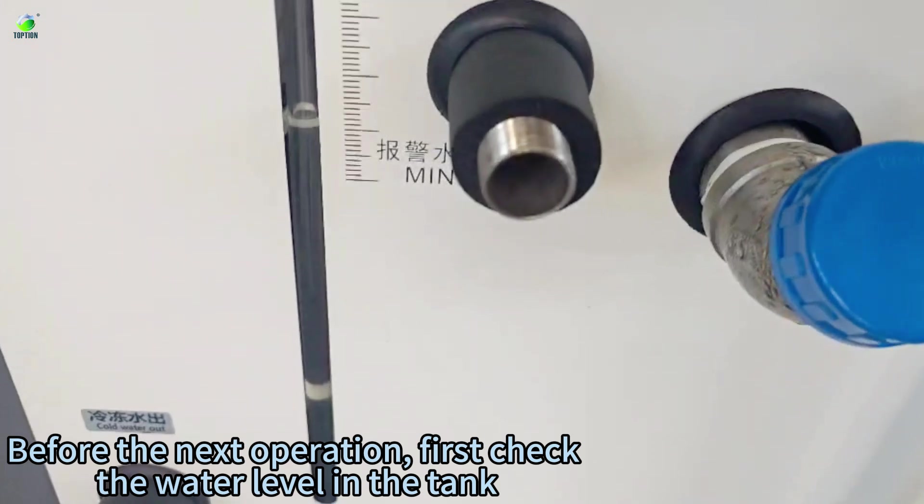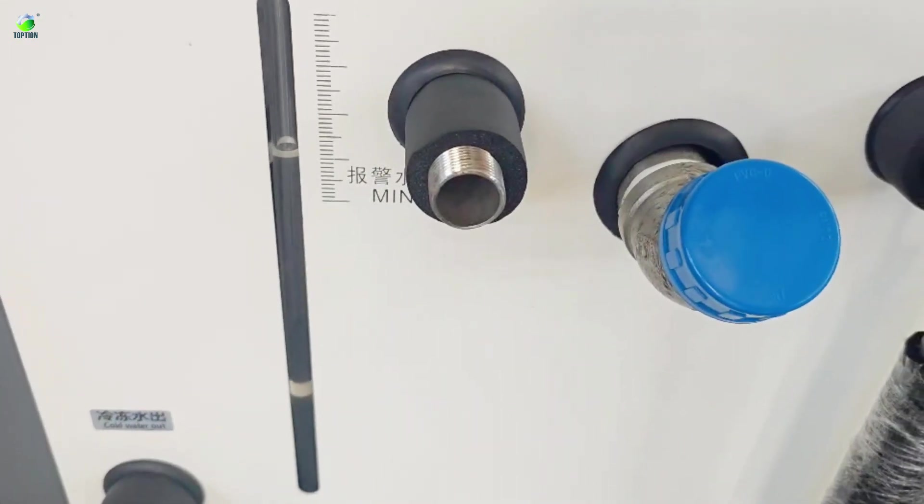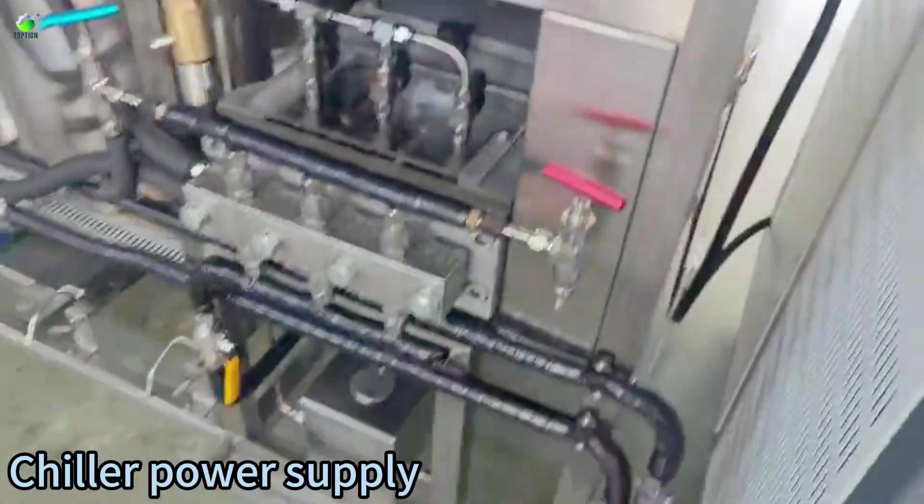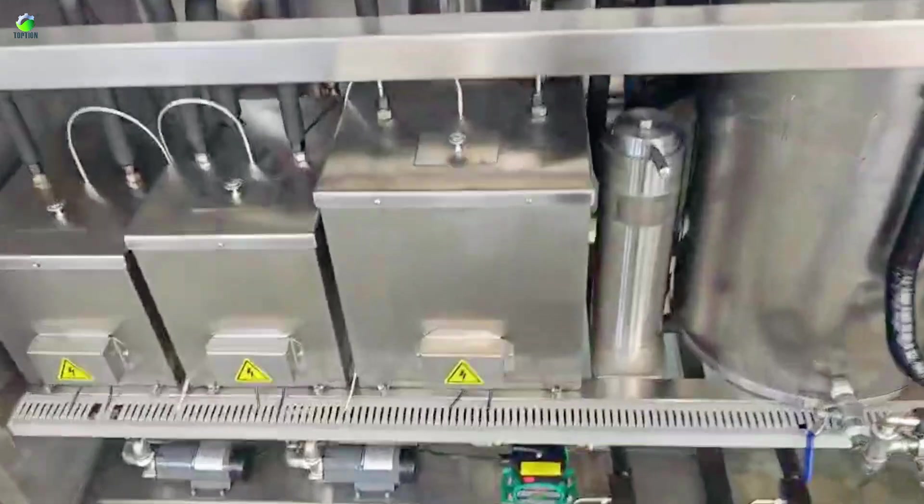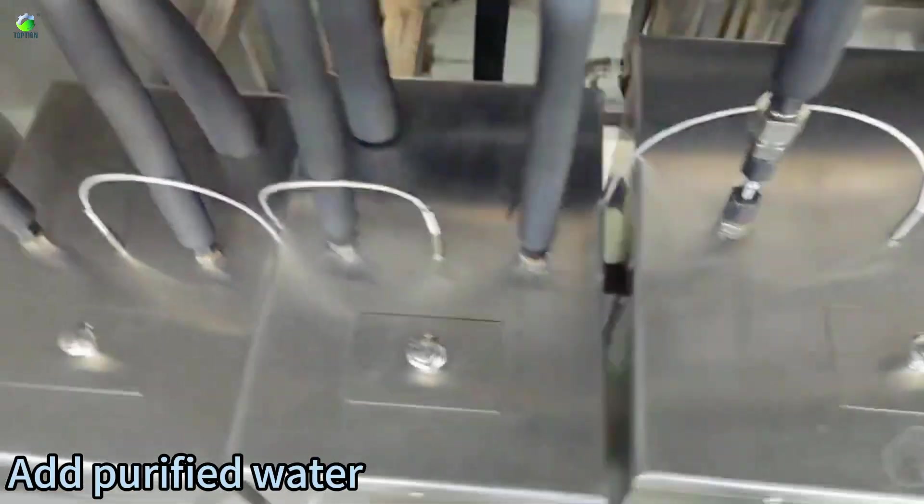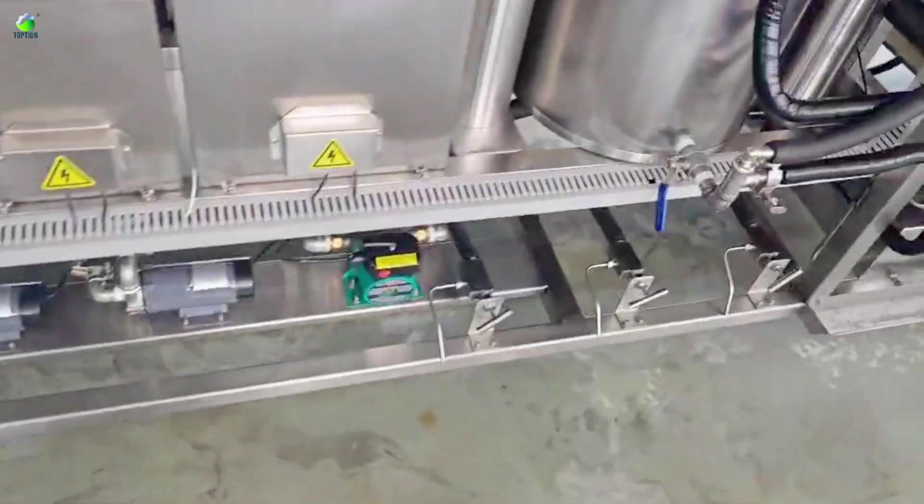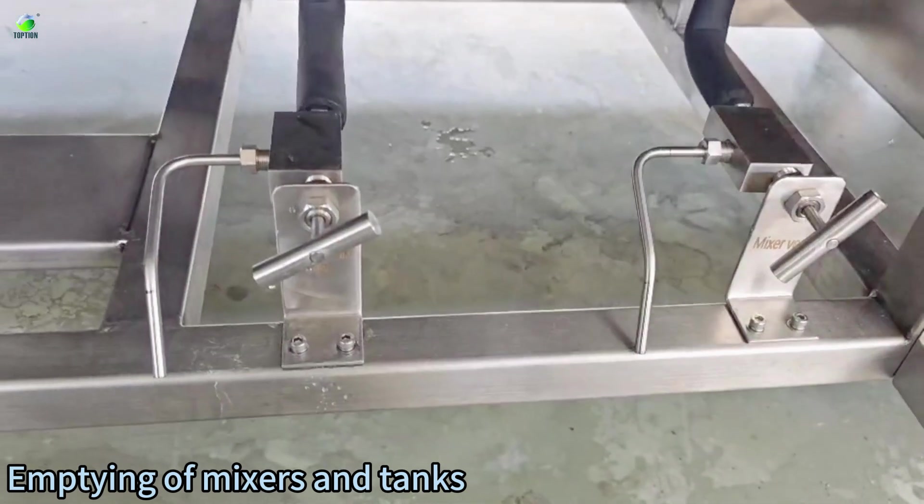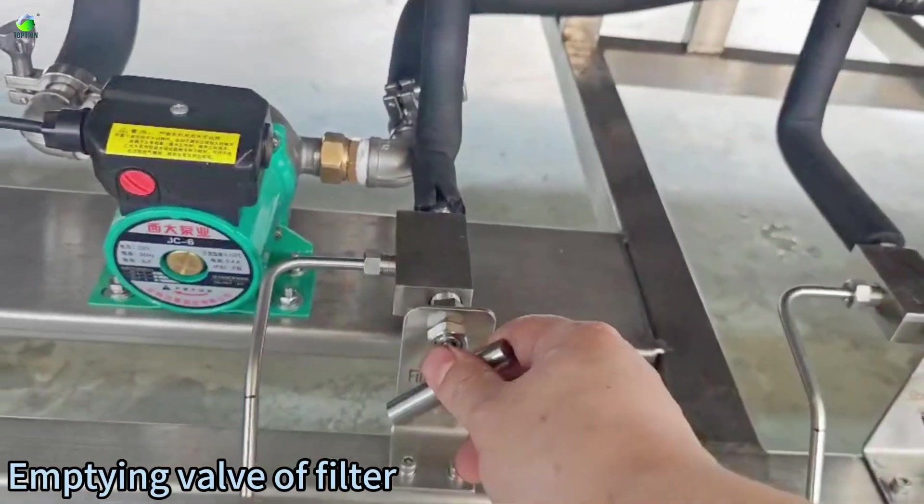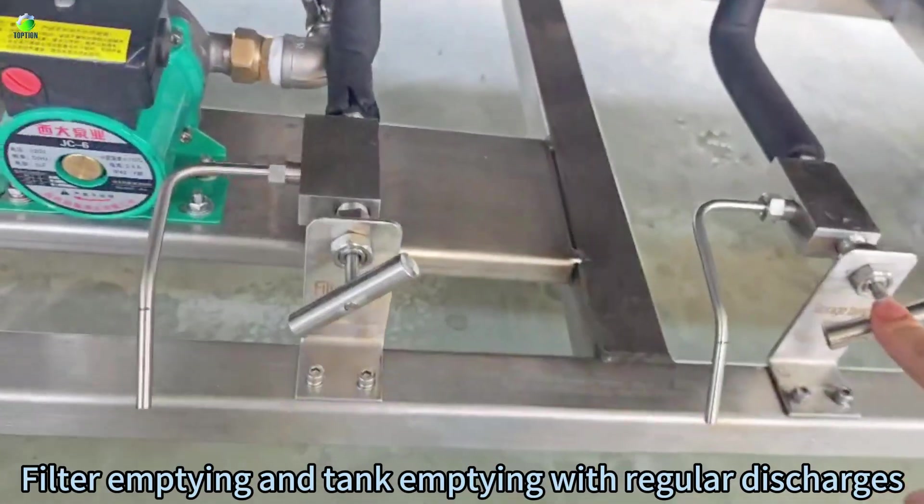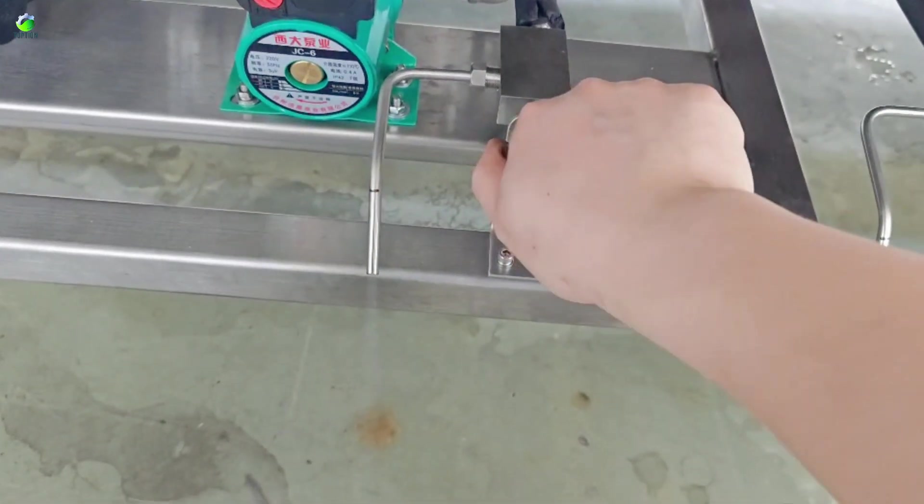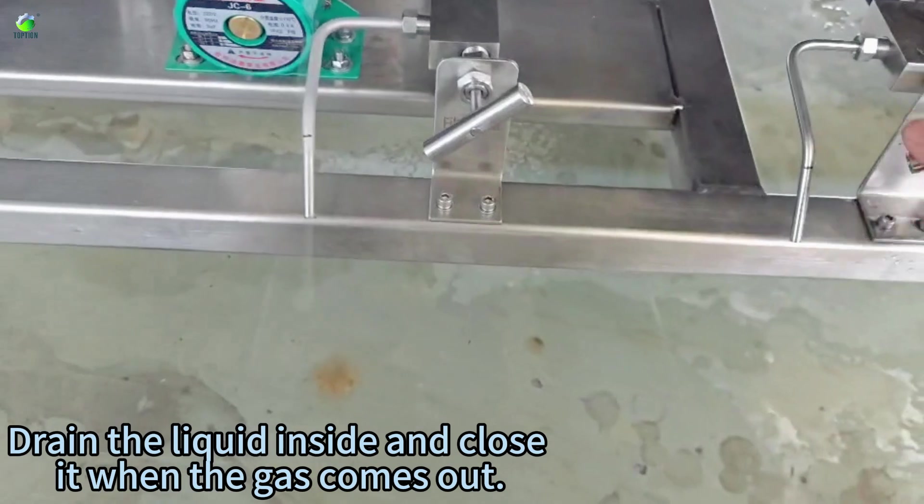Before the next operation, first check the water level in the tank. Chiller power supply. Add purified water. Emptying of mixers and tanks. Emptying level filter. Filter emptying and tank emptying with regular discharges. Discharge at least twice a day. Drain the liquid inside and close.